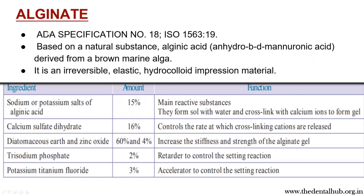Alginate. According to the American Dental Association, the specification number of alginate is number 18. It is based on a natural substance, alginic acid, derived from marine brown alga. It is an irreversible elastic hydrocolloid impression material. Coming to its composition, it contains sodium or potassium salts of alginic acid at 15%, which are the main reactive substances that form a sol with water and then cross-link with calcium.